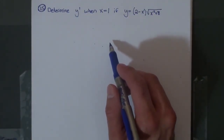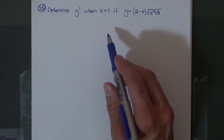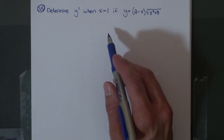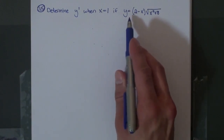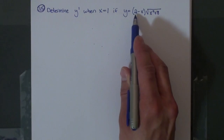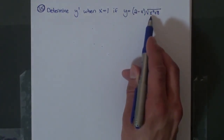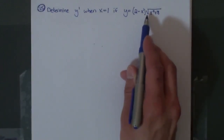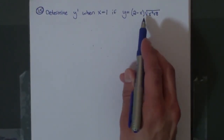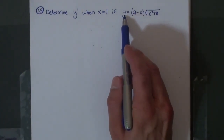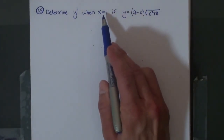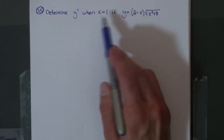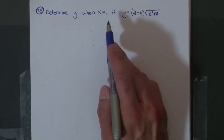In this problem, number 15, we're going to be determining y prime of x is equal to 1, if y is equal to the quantity 2 minus x times the square root of x squared plus 8. In order to do this, we first need to determine y prime, then once we determine y prime, we plug in x is equal to 1, and then we evaluate the derivative at x is equal to 1.